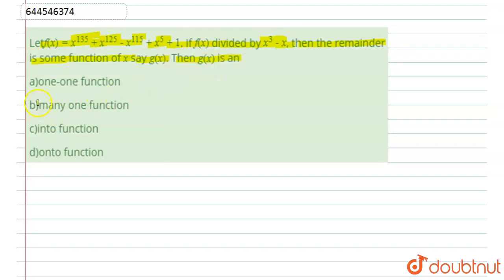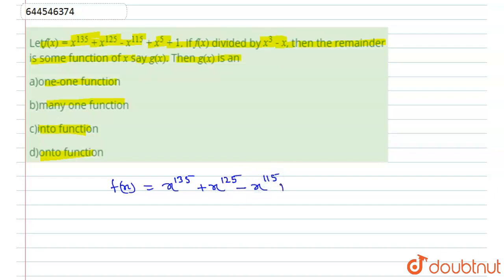Then g(x) is n. Now we have to see in the options: this is the one-one function, many-one function, onto function, and into function and onto function. Now in this question, you can see that f(x) is equal to x to the power 145 plus x to the power 125, minus x to the power 115, plus x to the power 5, plus 1. And it is divided by x cubed minus x. Now we can see that the maximum power of this divisor is 3, and the minimum power of f(x) is 5.